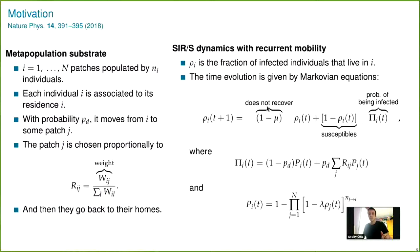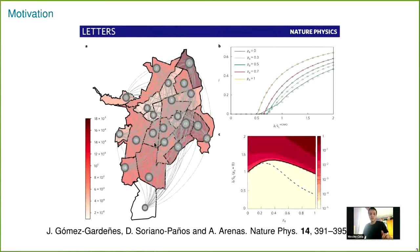The SIR or SIS dynamics can be described by discrete Markovian equations that consider the probability to heal and the probability to be infected. This probability of being infected depends on whether you stay in your patch — the probability P governs movement. It also depends on the probability to be infected when you are in another patch J, given by the mobility matrix. People from one place can interact with residents of other patches, not only with the residents where they live. This is the example from the original paper, showing the city of Cali in Colombia.